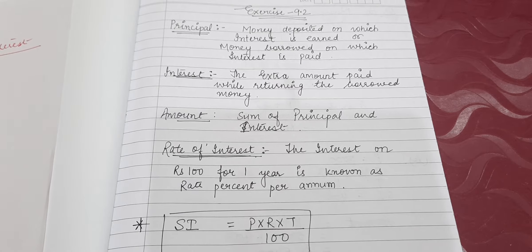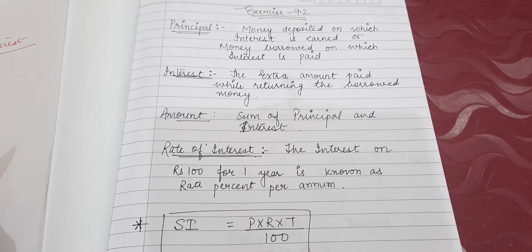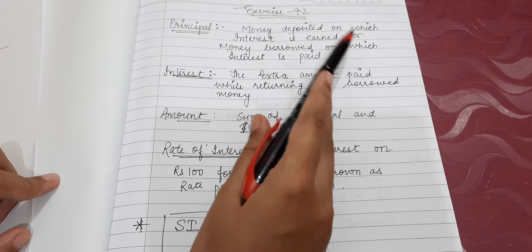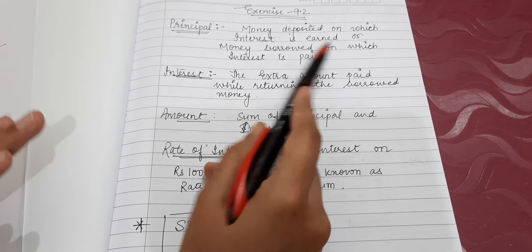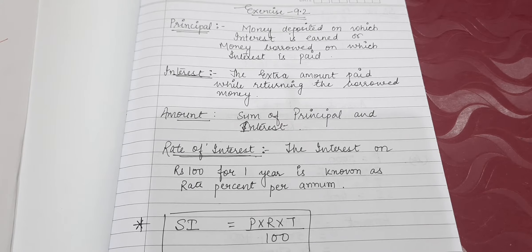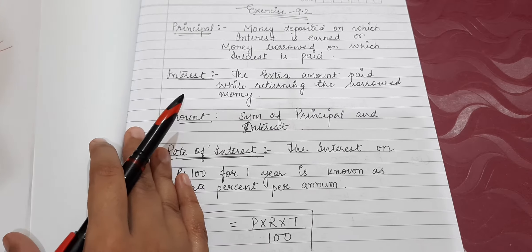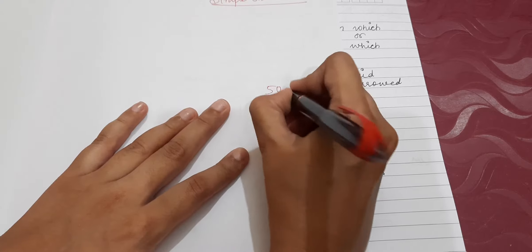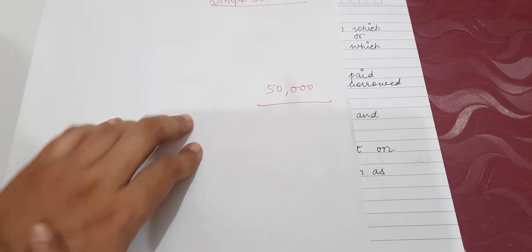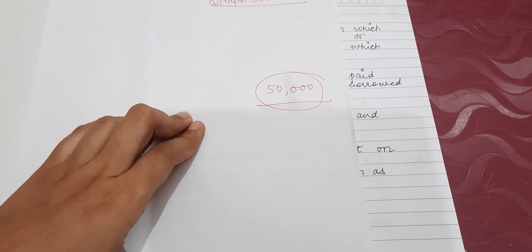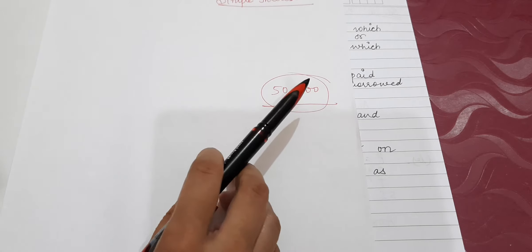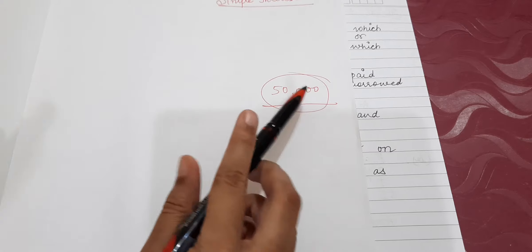Principal means the money which we have borrowed from somebody, or the money which we have deposited with somebody — money deposited on which interest is earned, or the money borrowed on which interest is paid. For example, if I am taking a loan from the bank of rupees 50,000, that value is my principal amount.